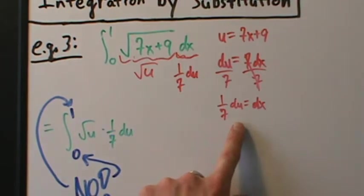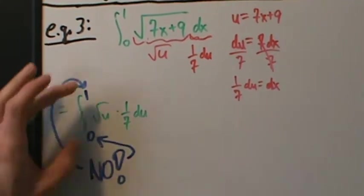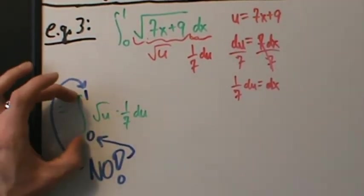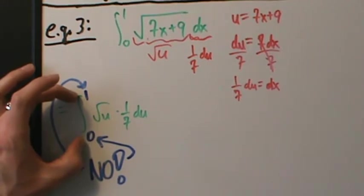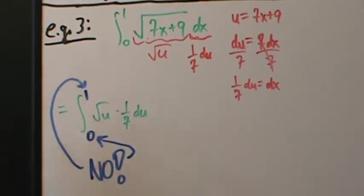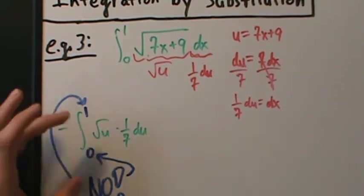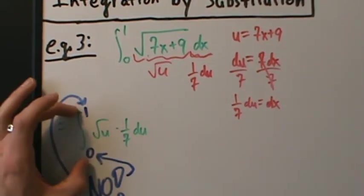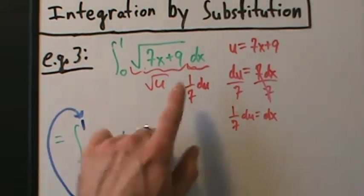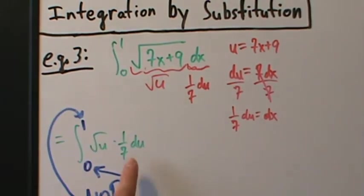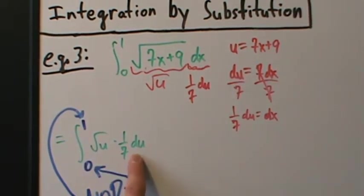So the limits of integration can't stay 0 to 1. We always want to change them to be in terms of the new variable. Since our new integral is with respect to u, we need limits for u, not for x.